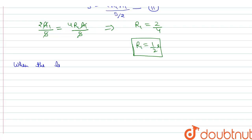When the length of the wire is halved, then the resistance is also halved.